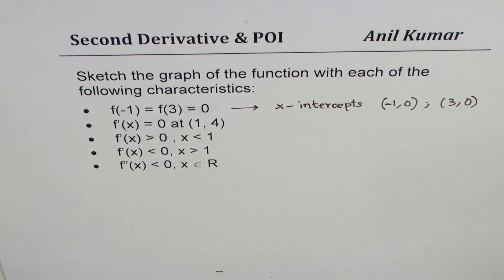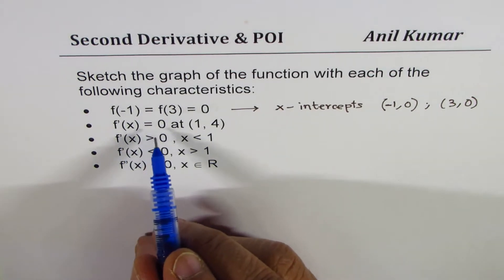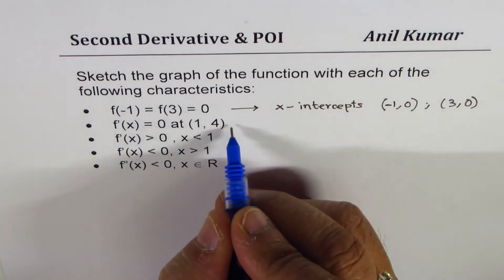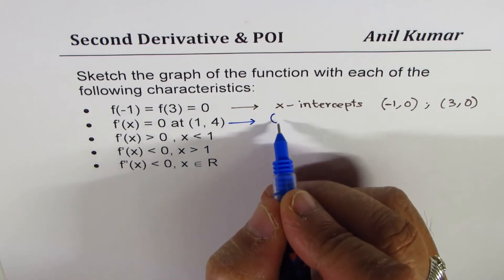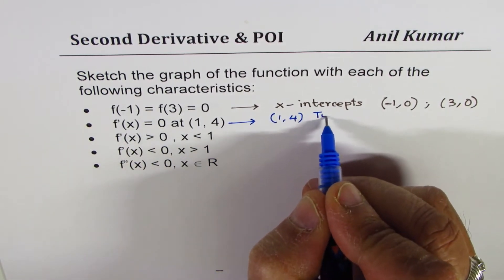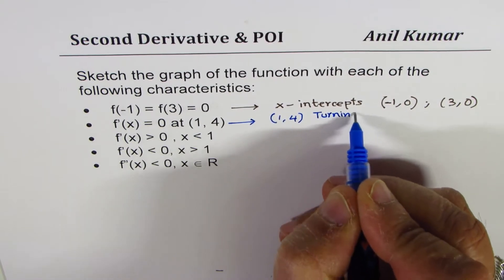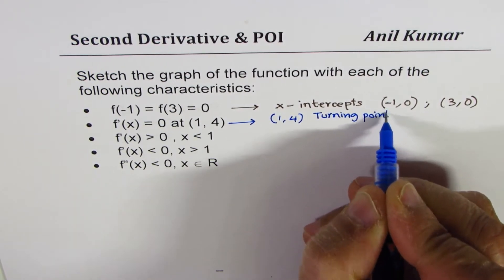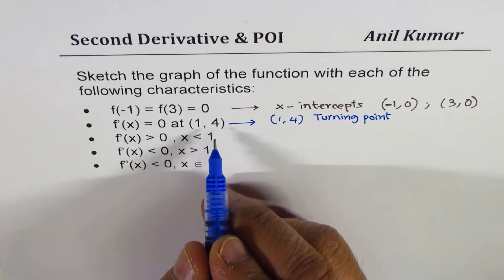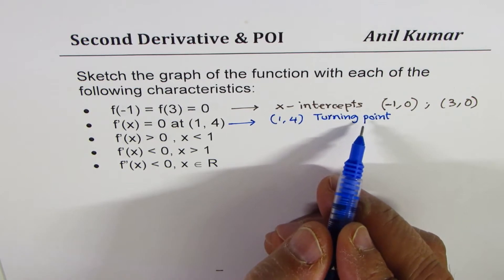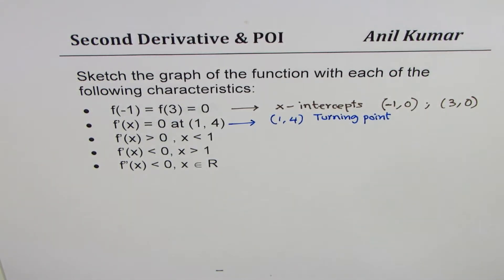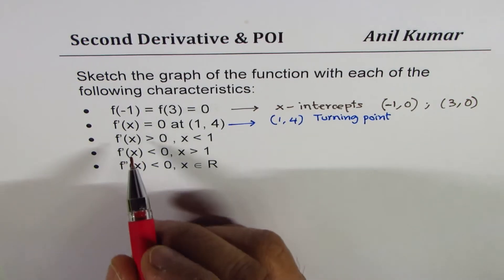The next statement says the first derivative is 0 at (1, 4). When the first derivative is 0 at a point, that means we have a turning point there. We are not sure whether it is a maximum or minimum, but definitely there is a turning point — so there could be a local maximum or a local minimum.